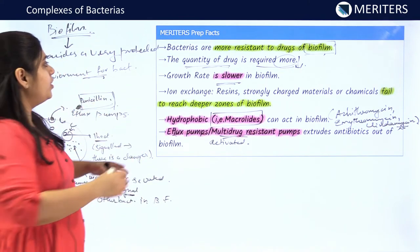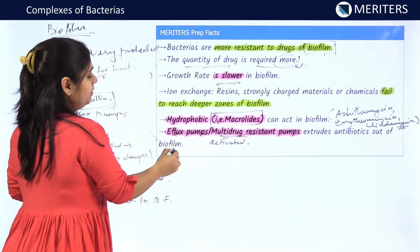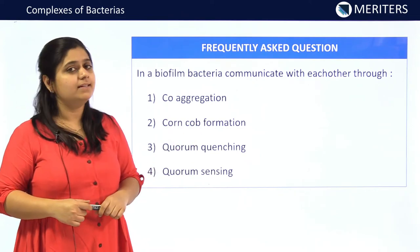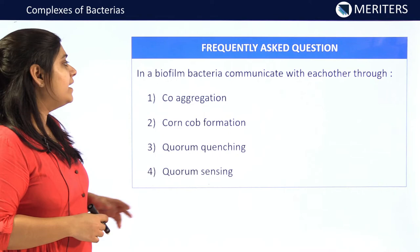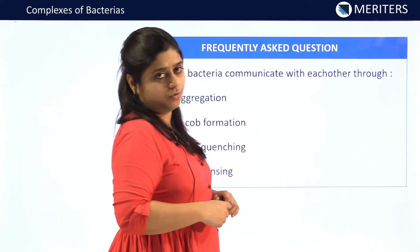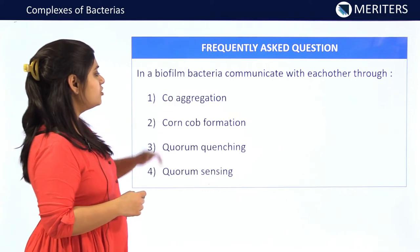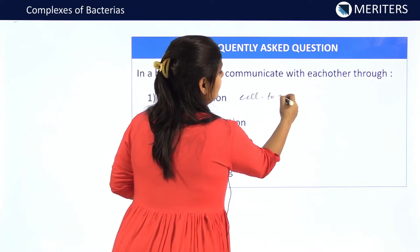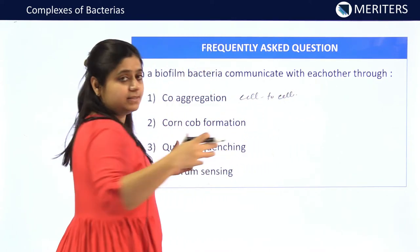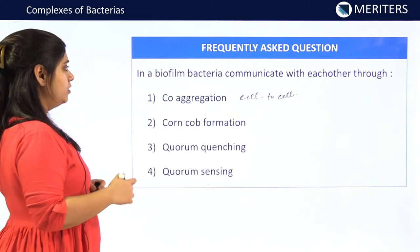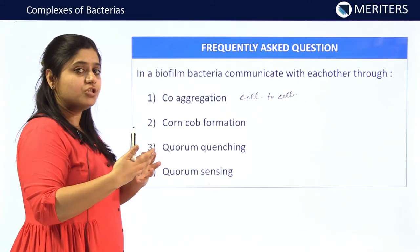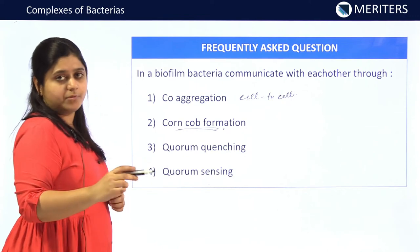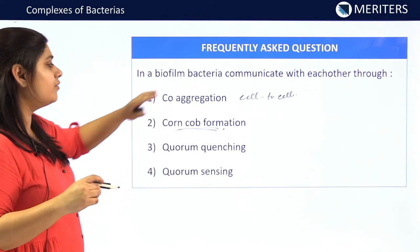These are the important points to remember and can be asked in MCQs. The first question is: in a biofilm, bacteria communicate with each other through which method? Option 1 is coaggregation, which is a method of cell-to-cell interaction where cells attach to each other through receptors — it is not a method of communication. Option 2 is conch formation, which is a type of coaggregation and also not a method of communication.